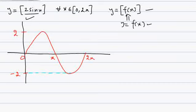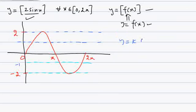We draw lines at y = −2, y = −1, y = 0, y = 1, and y = 2. These are y = k lines where k is an integer. After plotting these lines, we mark the points of intersection between the graph of f(x) and the y = k lines.